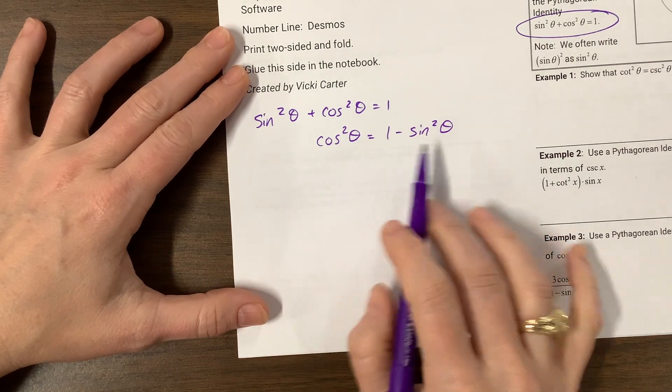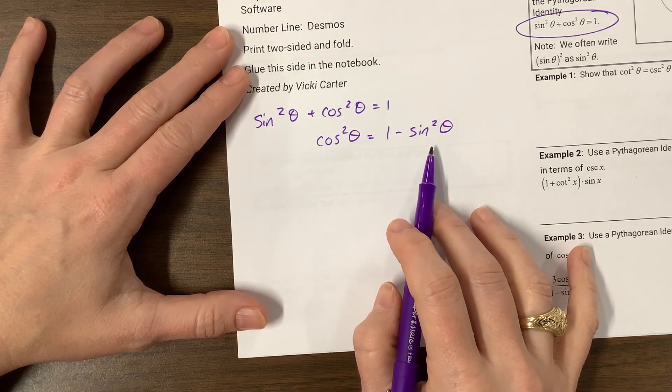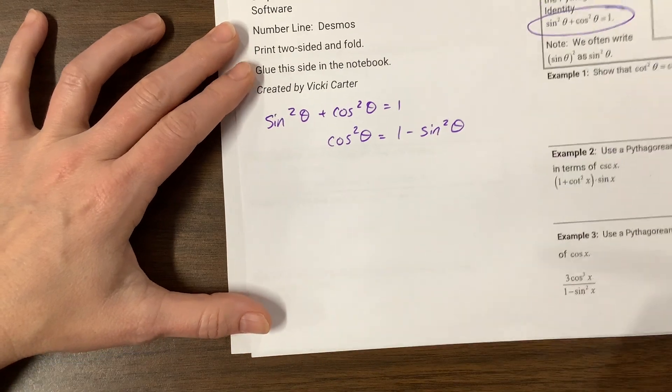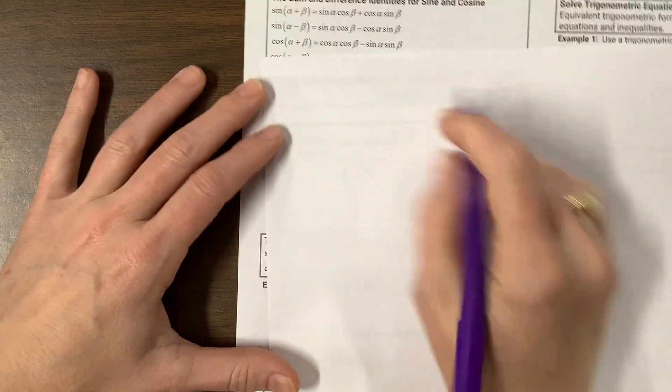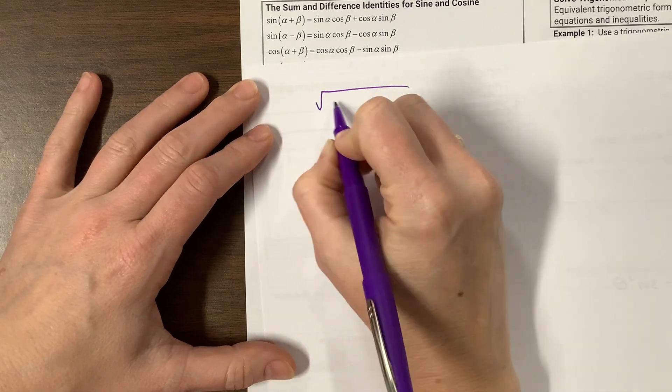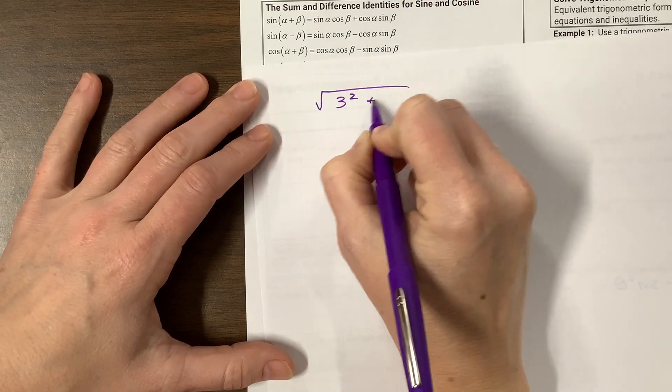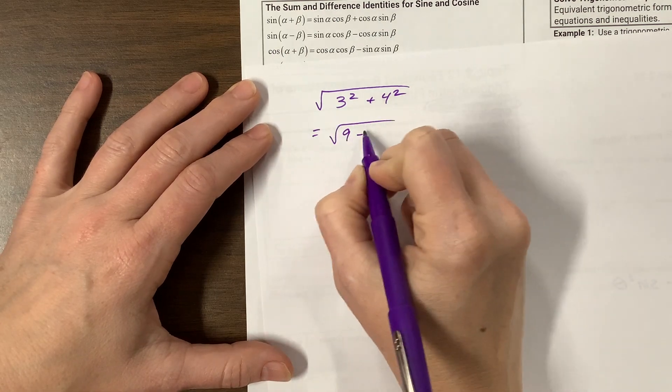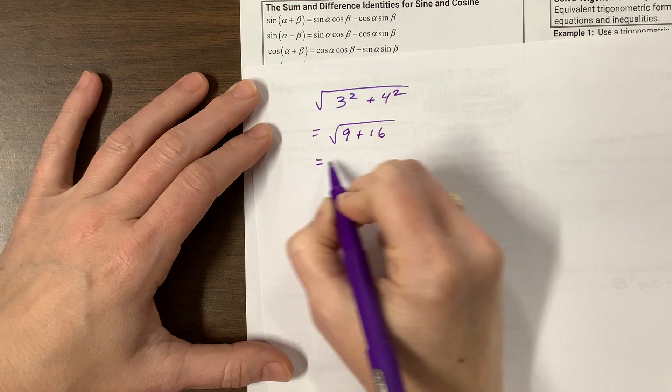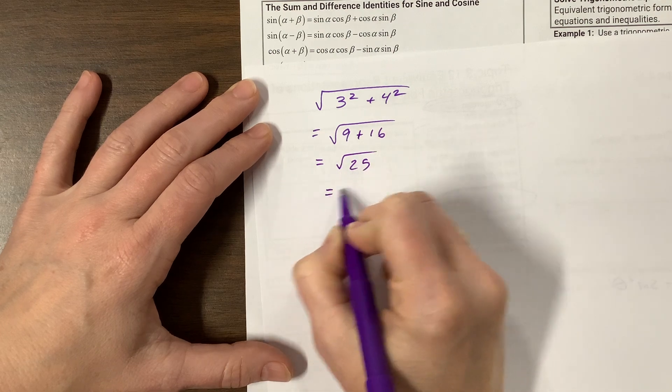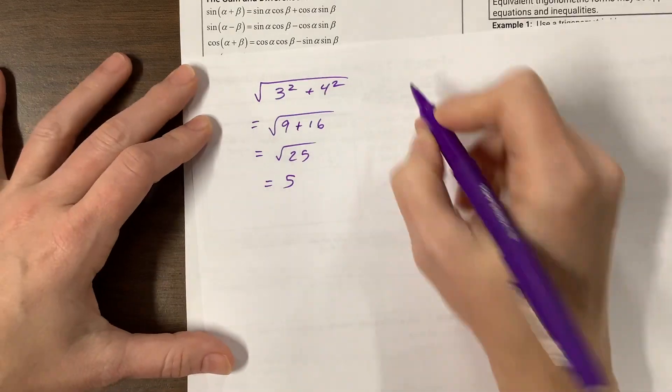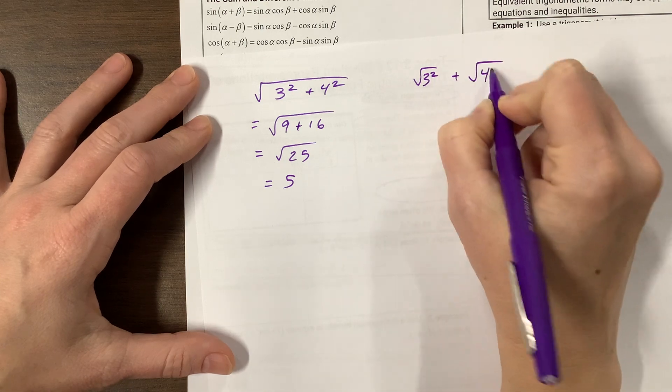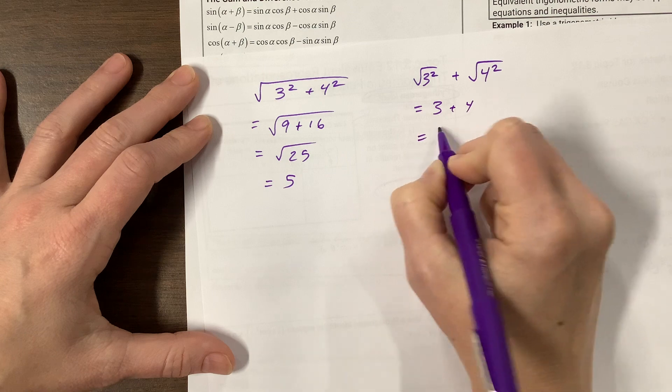that doesn't mean that cosine is equal to one minus sine. That's a mistake I see my kids write. They'll be like, oh, let's just square root everybody. Oh, that doesn't work. Think about this for a second. If I say the square root of three squared plus four squared, well, this is equal to nine plus sixteen. Nine plus sixteen is twenty-five. Square root of twenty-five is five.